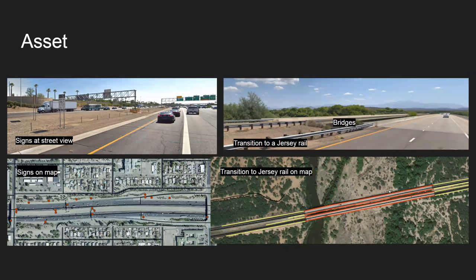Some other things we keep track of that are pretty important are signs throughout the right-of-way. If you drive down any roadway, you're going to see a multitude of signs. Some facilities have more than others, but you can imagine there are literally tens of thousands of signs along the roadways throughout a state — a lot to keep track of. We also keep track of bridges, jersey rail or barriers, which transition to more positive structures like concrete jersey barriers. All of those are assets we must keep track of and maintain in good working and safe operating condition.